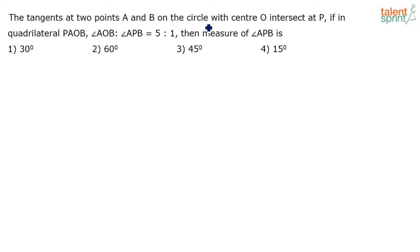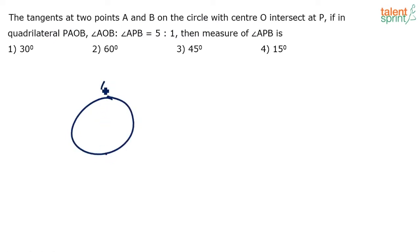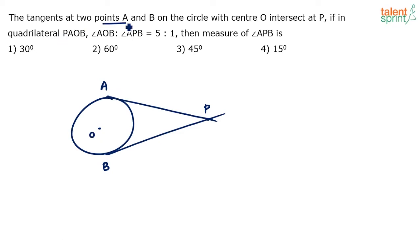Tangents at two points A and B on a circle with center O intersect at P. In quadrilateral PAOB, angle AOB to angle APB equals 5 to 1. Let's draw the figure first. This is the circle with points A and B; tangents at A and B intersect at point P, and O is the center of the circle.